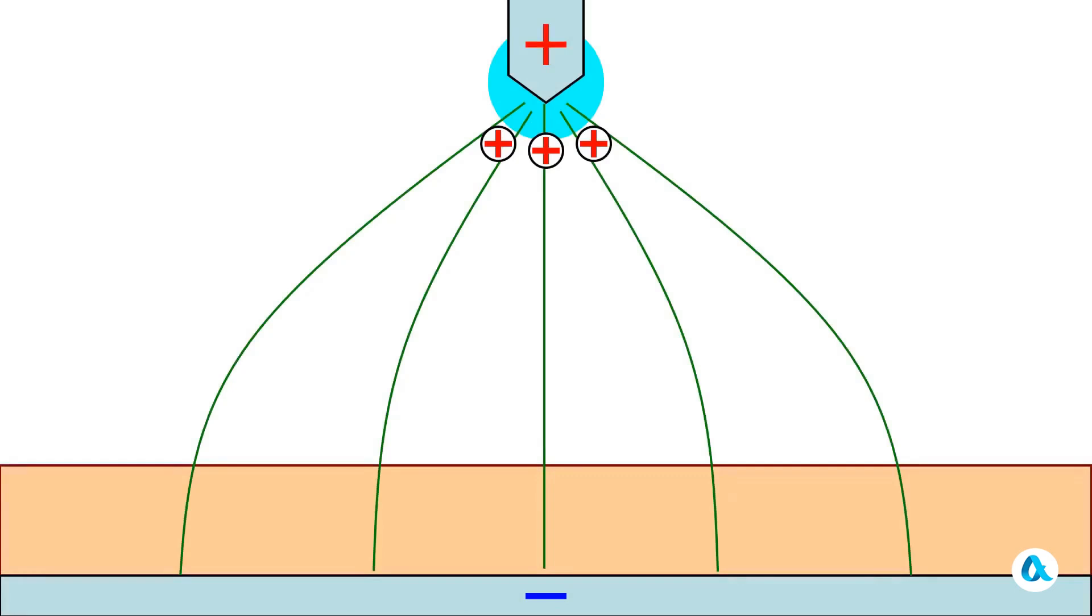Positively charged ions fly out from the region of the corona discharge, land on the surface of the oil, slowly drift through it, and are neutralized at the negative electrode.